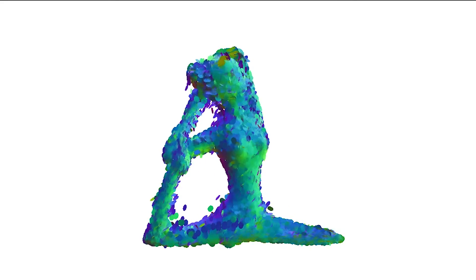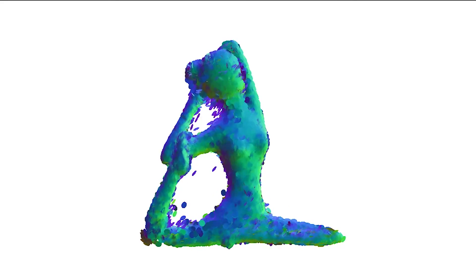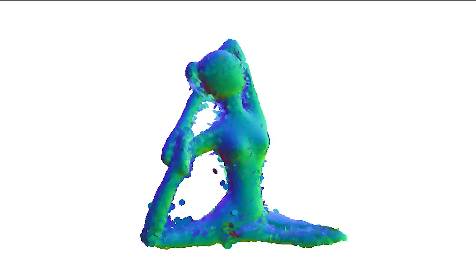Our method is the first point-based generic differentiable renderer that can handle significant shape deformation, as example, cube to a yoga shape.